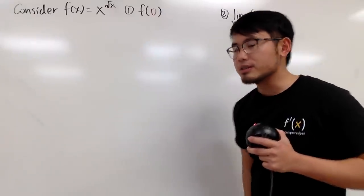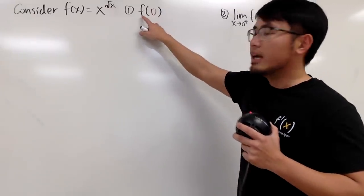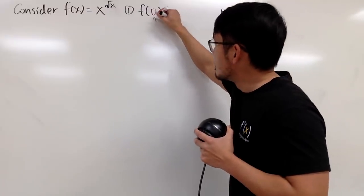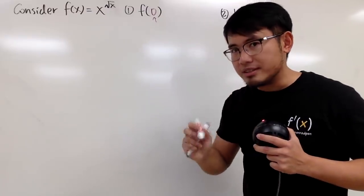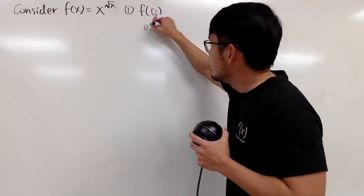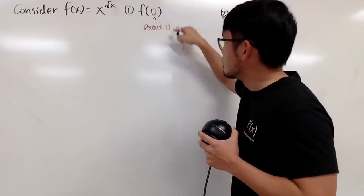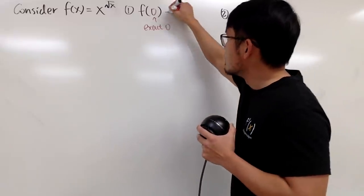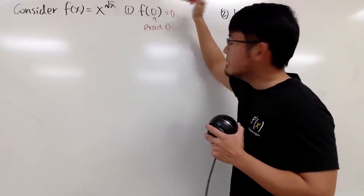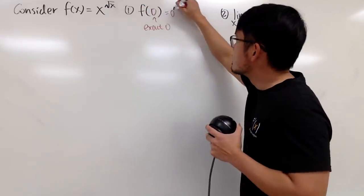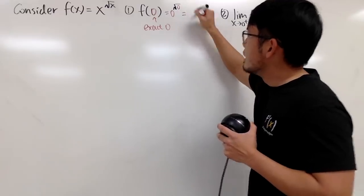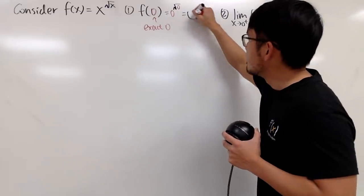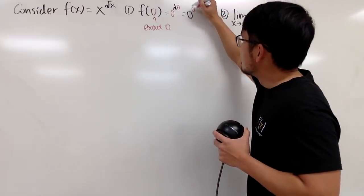Let's do this one first. When we calculate f(0), we plug in exact 0 into all the x. So we get 0 for the base, and the power will be square root of 0. Square root of 0 is just 0, so we have 0 for the base and 0 for the power.